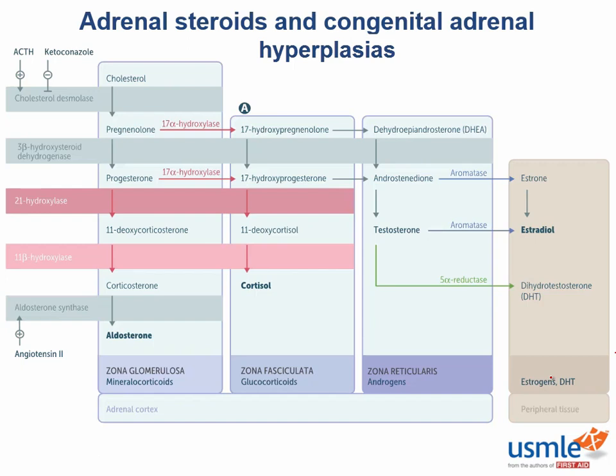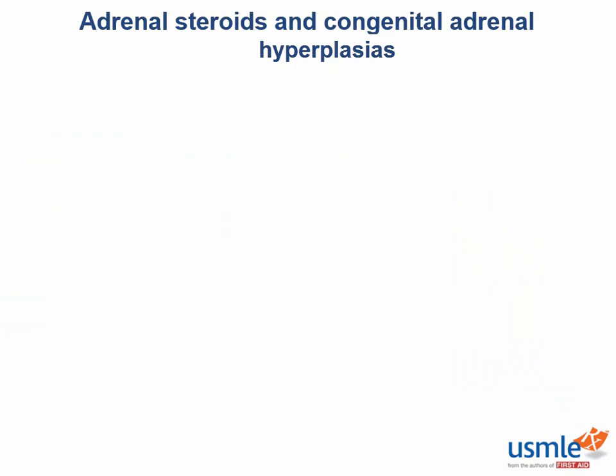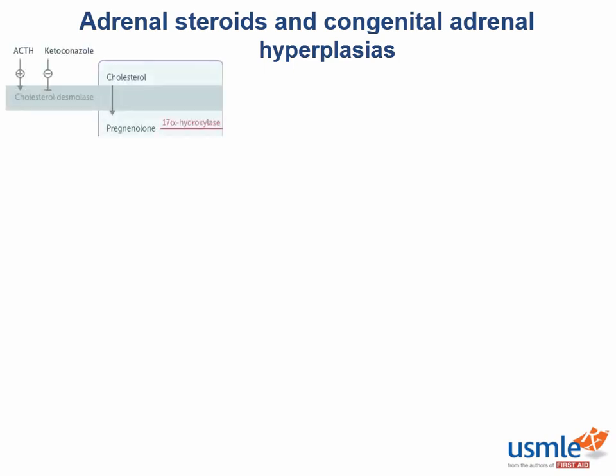First thing you gotta know: what basic molecule makes all steroids possible? The answer is cholesterol, the precursor molecule to every one of these bad boys. Its conversion to pregnenolone is the rate-limiting step, the one that's controlled by ACTH. Once ACTH allows entry into the steroid synthesis pathway, the magic can begin.